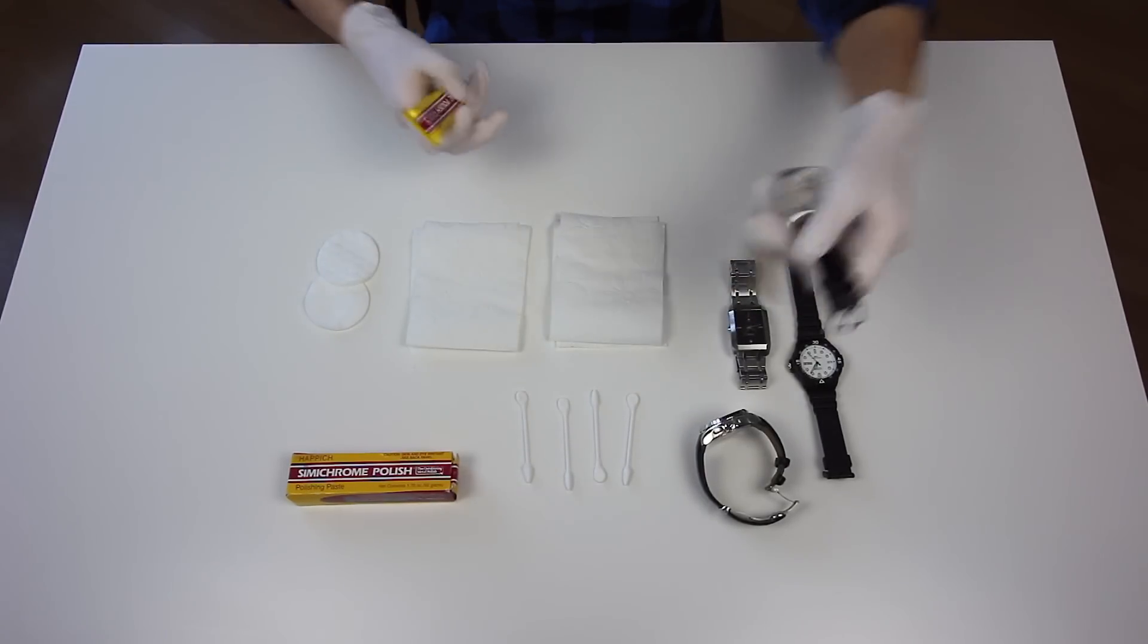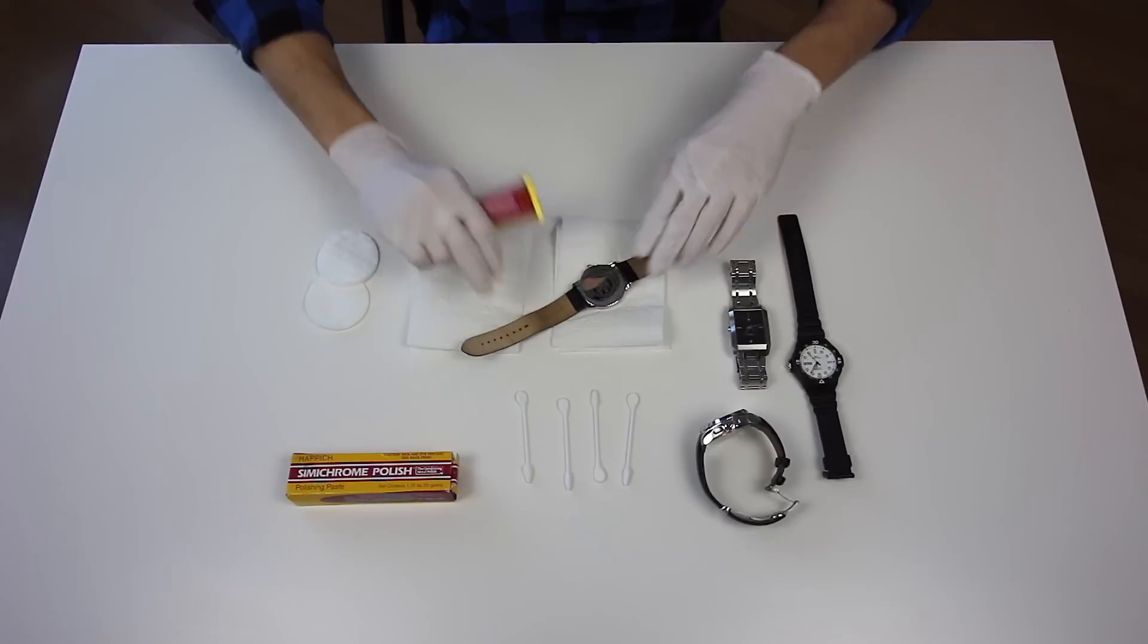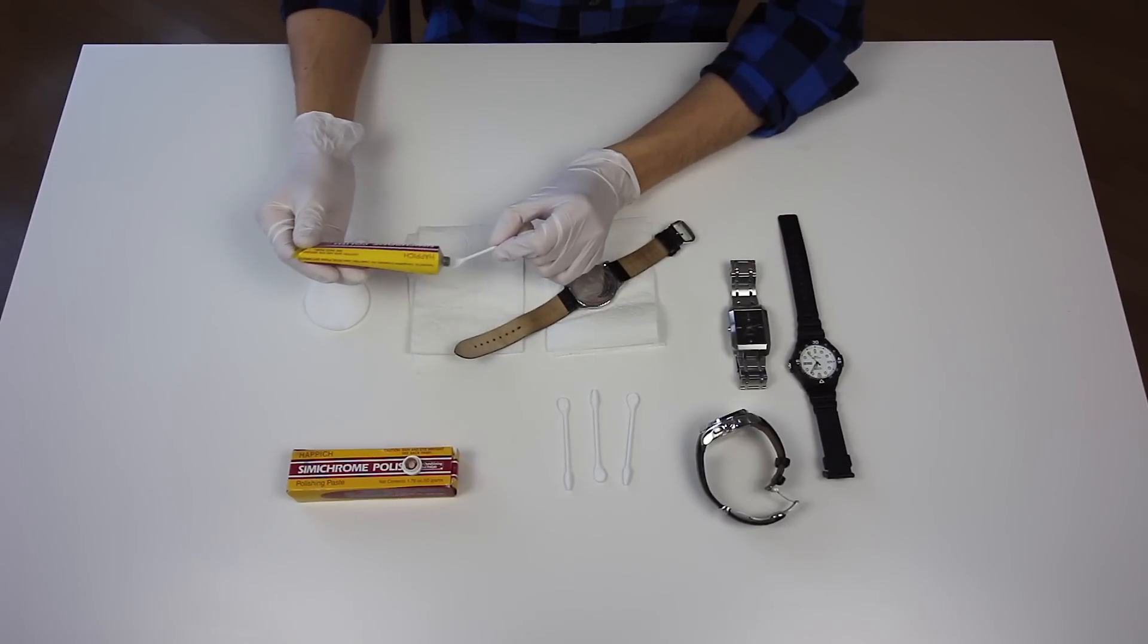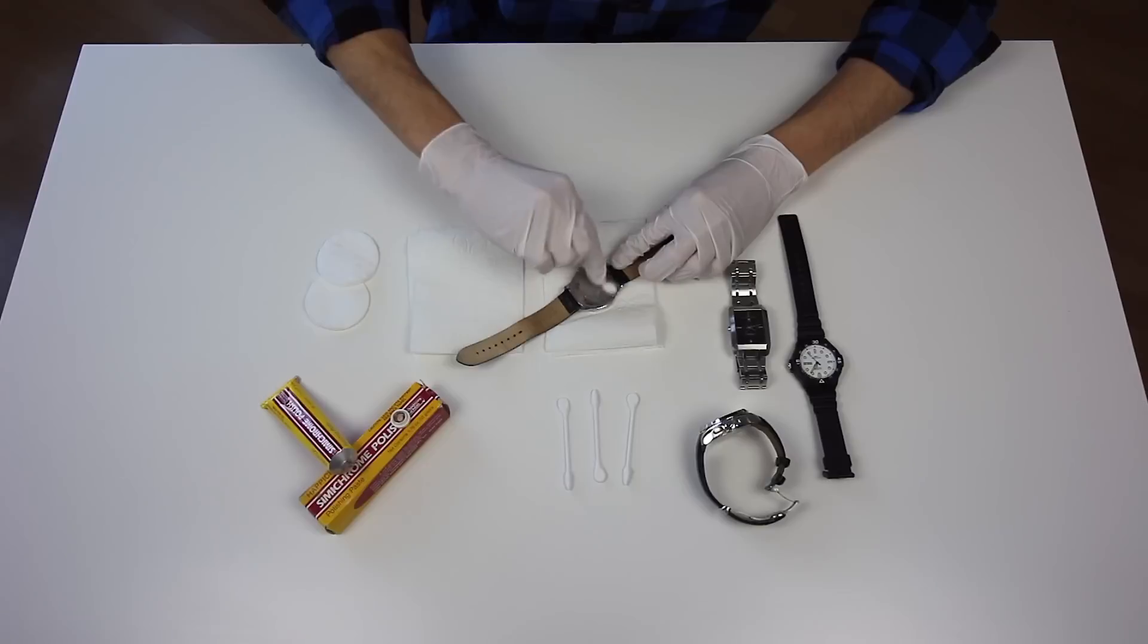Ok, lo que hacemos es lo siguiente: voy a limpiar este nada más para que te des una idea. Aplicas un poco sobre el aplicador y lo que haces es que empiezas a pulir el reloj.